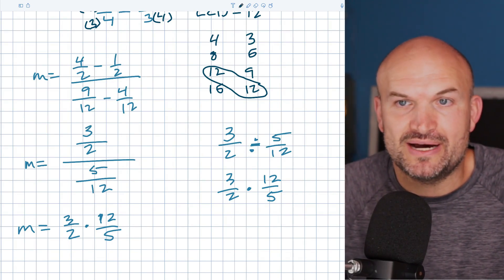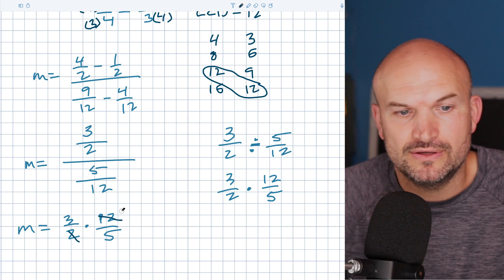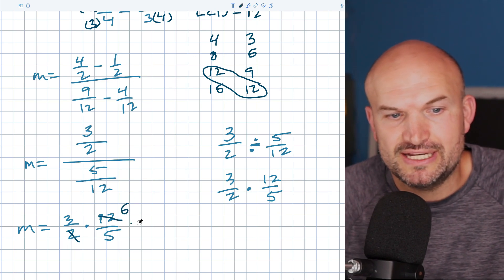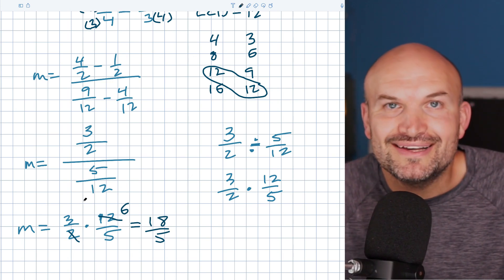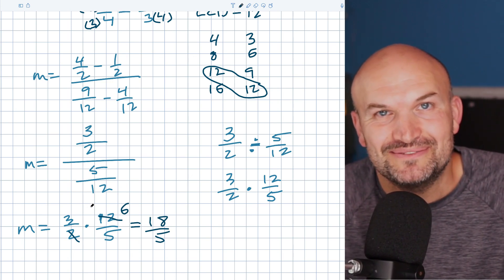And now let's go and simplify this. So now you can see that my 2 divides into a 12, six times. 3 times 6 is going to be 18 over 5. That cannot be simplified anymore, but now that is your slope and we're all done. I'll see you in the next video. Cheers.